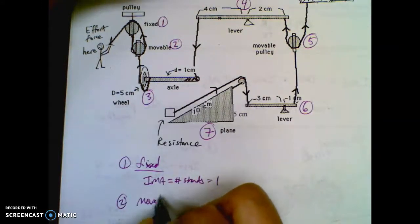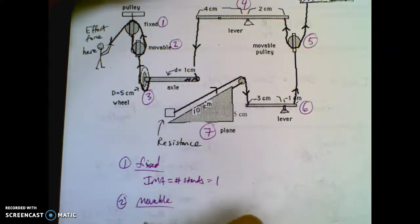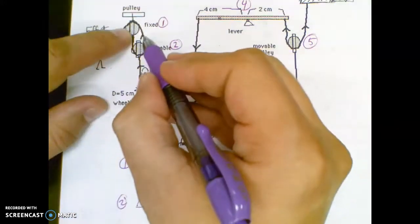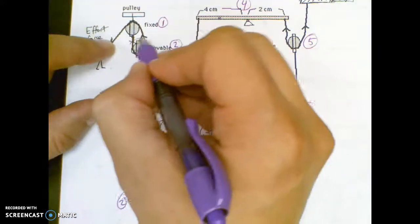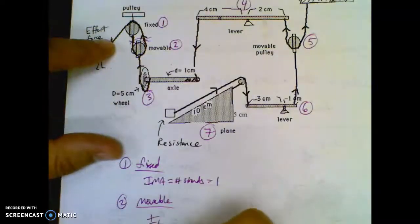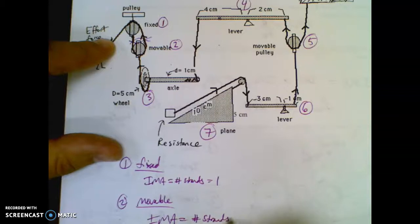Number two, movable pulley. Now this one you're pulling up in the same direction as you go, so you count both strands. There's two of them. IMA equals hashtag strands equals two.